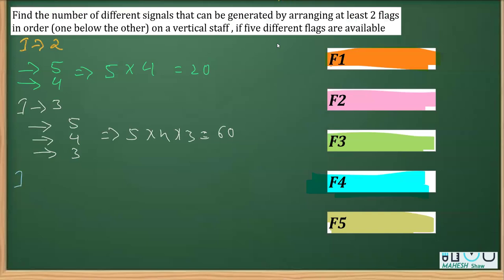Now case three, when we can use four flags at a time, so the number of slots are one, two, three, four. So first flag can be chosen in five ways, four ways, three ways and two ways. That implies 5×4×3×2, so that is 120.